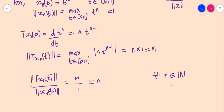The sequence terms correspond to every natural number n. If T were bounded, then n = ‖T(x_n)‖ / ‖x_n‖ ≤ c for every n ∈ ℕ, which would imply the set of all natural numbers is bounded — which is not possible. Therefore we cannot find any c such that n ≤ c for every n ∈ ℕ.